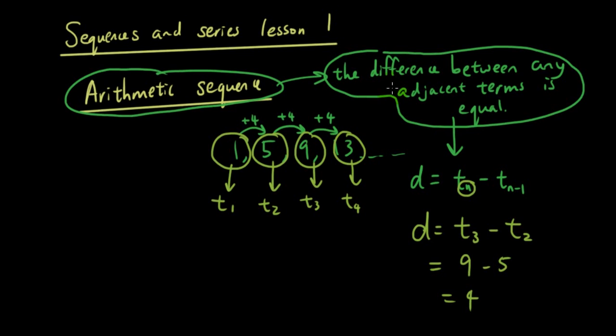Okay, so the difference between any adjacent term is D, and that's a very important number that we need to find. Now another term that we need to find is called A. A is simply equal to T1, and that is the first term, the first term of our sequence.